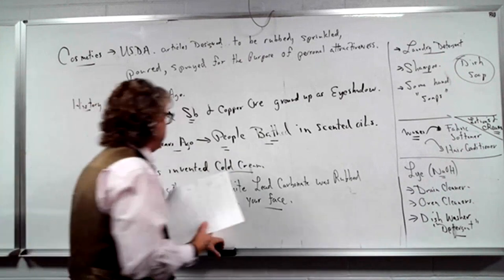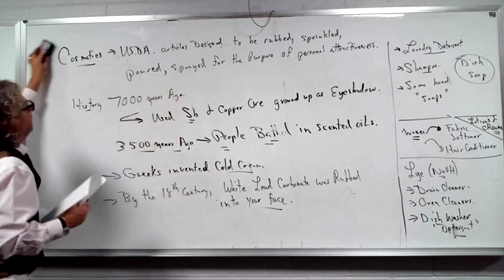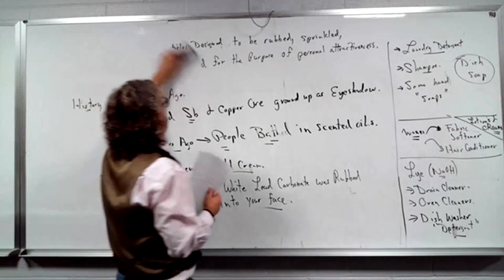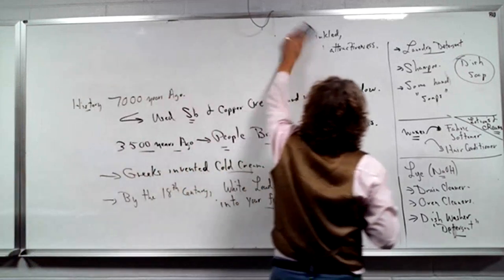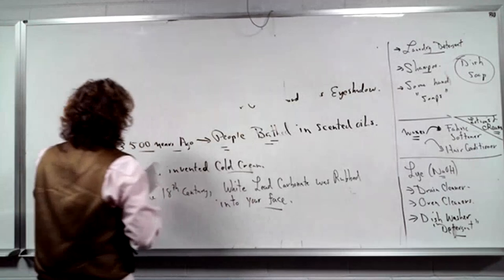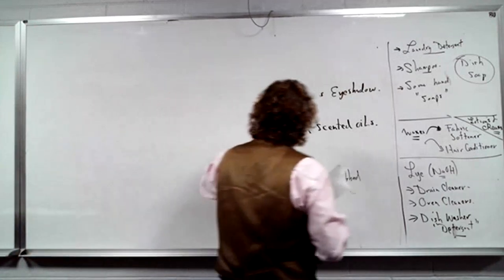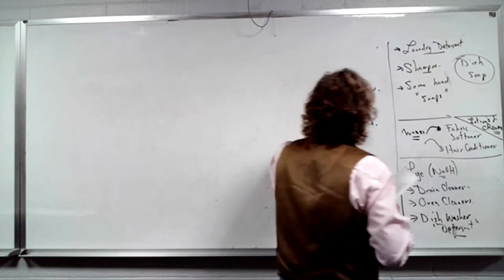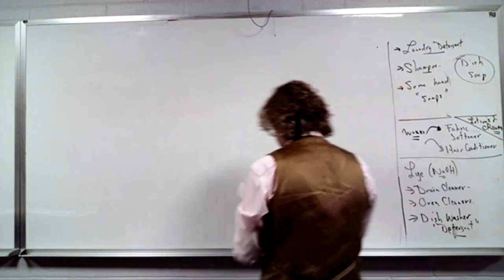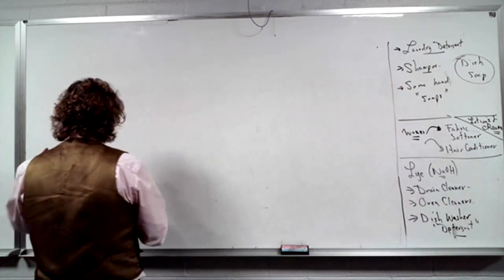So, got your USDA definition here. What's a drug in the first place? Food and Drug Administration, right? What can be tested on animals, what should be tested on animals? Well, nothing should be tested on animals, but what has to be tested as a drug and what doesn't. Let's talk about that. Here's a good example.